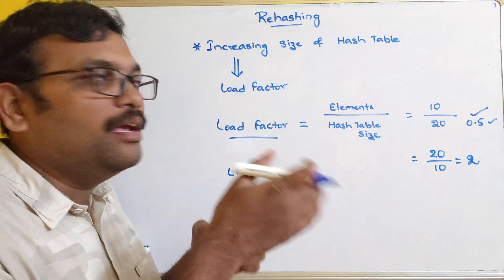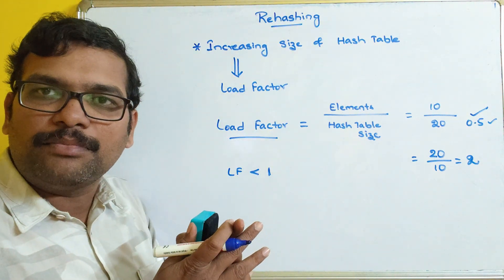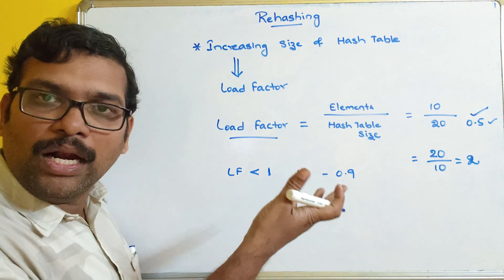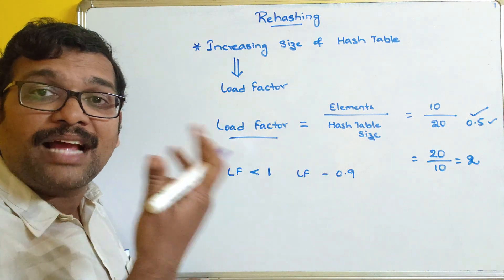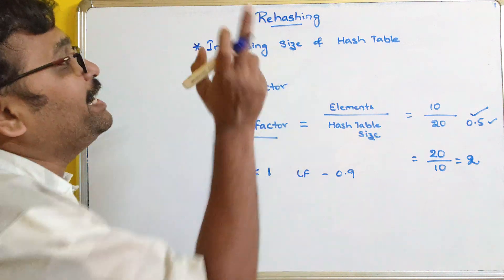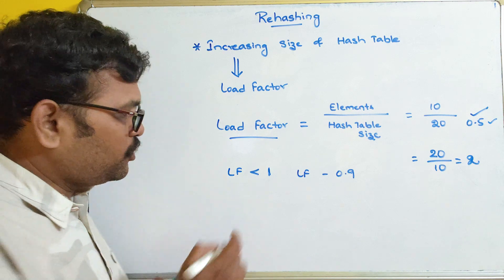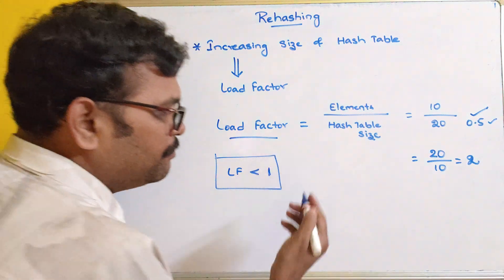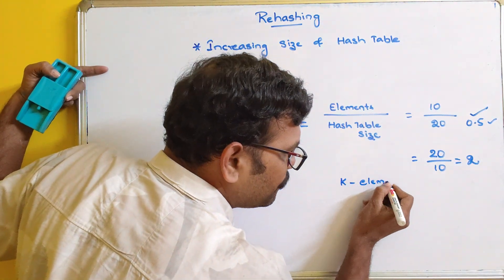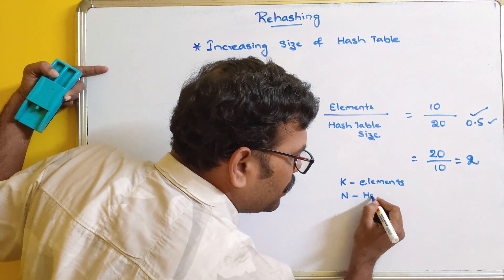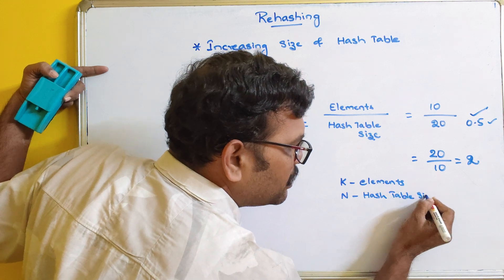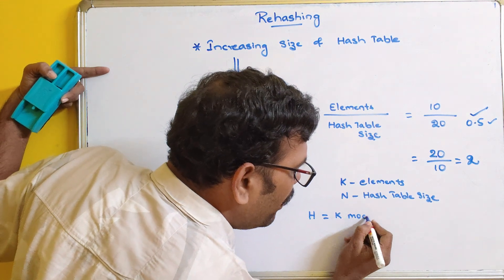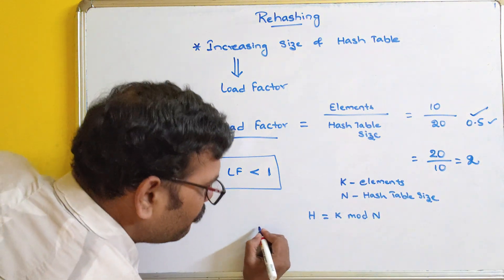We must take care that whenever the load factor reaches towards 1, we immediately have to increase the size of the hash table. For example, if the load factor becomes 0.9, which is almost equal to 1, further elements can't be inserted. In such a case, we must immediately increase the hash table size. Here, k is an element and n is the hash table size, so the hash function is k mod n.